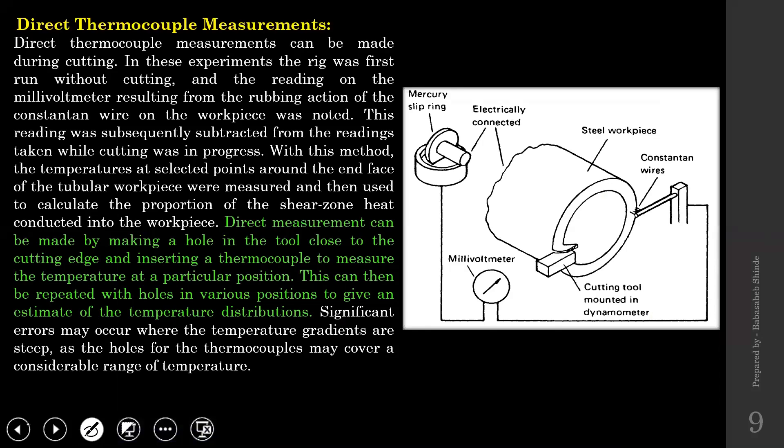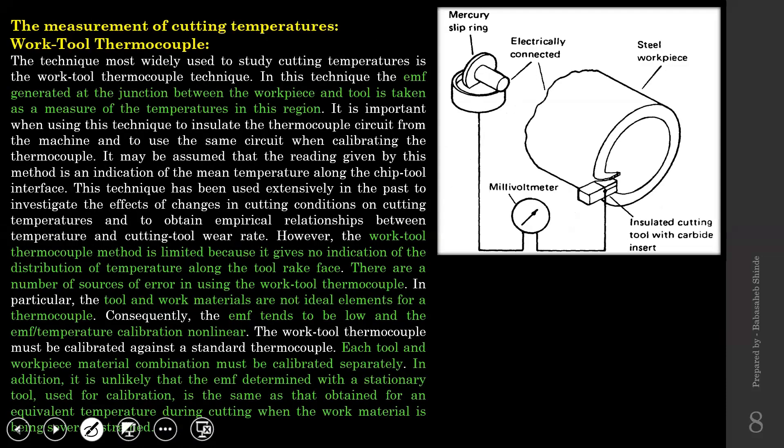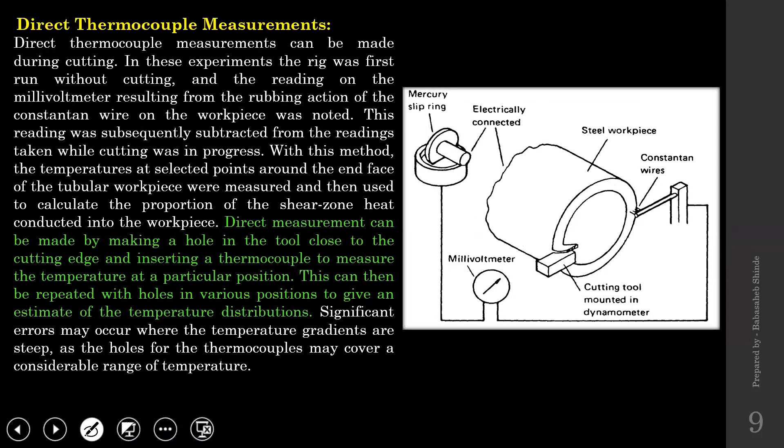We were discussing temperature measurement systems used in metal cutting. First we saw the work-tool thermocouple, where the work and cutting tool are considered part of the measurement system. In direct thermocouple measurement, those two are separated from the actual measurement system. We also discussed their respective advantages.